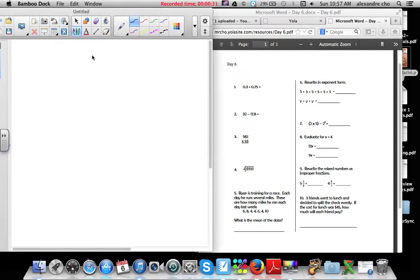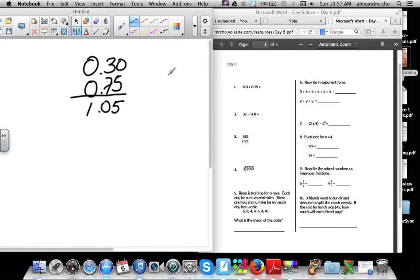Day six first one: 0.3 and 0.75. You're just simply adding these two, add a placeholder over here. You get 1.05. Number 2: